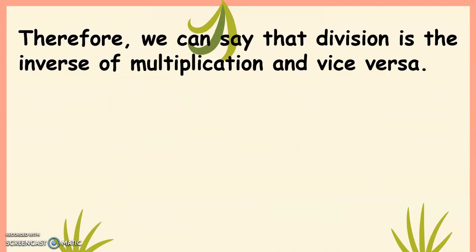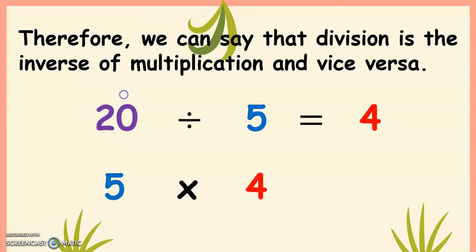Therefore, we can say that division is the inverse of multiplication and vice versa. We have 20 divided by 5 equals 4, and 5 times 4 equals 20. We still get to see the same numbers, but they function differently.